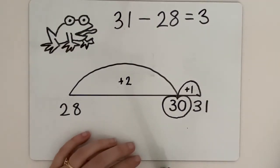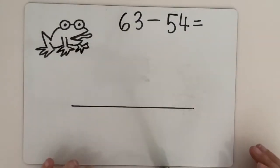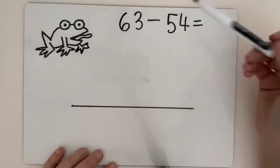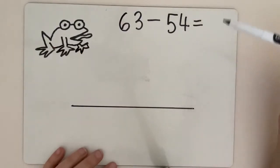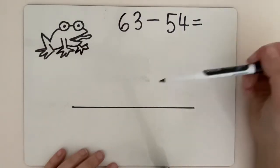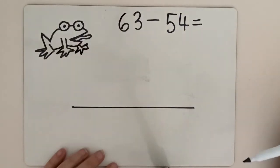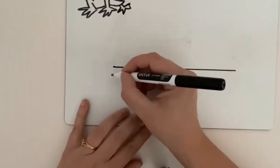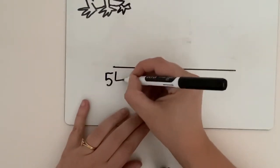We'll do one more example and then it's time for you to have a go on your own. Our last example today is 63 take away 54. Have a think which number am I going to start with on my number line? I'm going to start with 54 because that's the smallest number and we're counting up today.